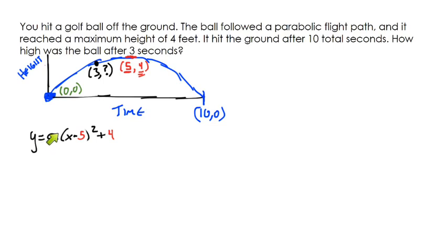We don't really know what that a value is. We don't know the stretch, but we do know other points. I have the ordered pair (10, 0) and the ordered pair (0, 0). It doesn't really matter which one we use, but I'm going to use (10, 0). I'm going to substitute that ten in for x and the zero in for y.